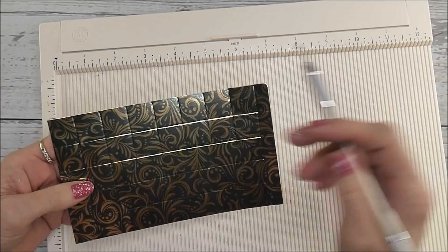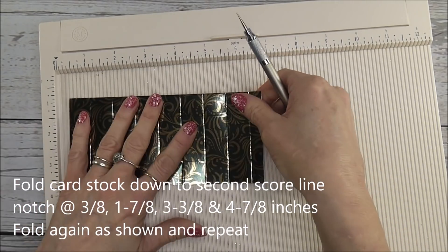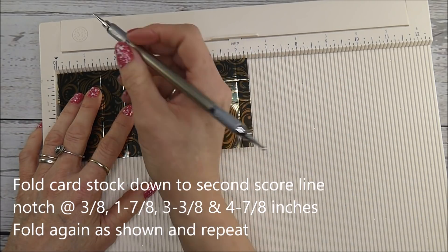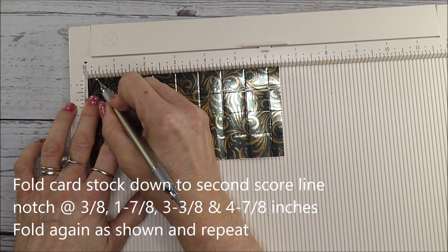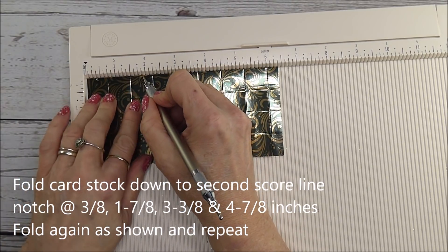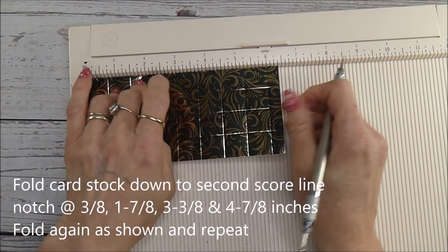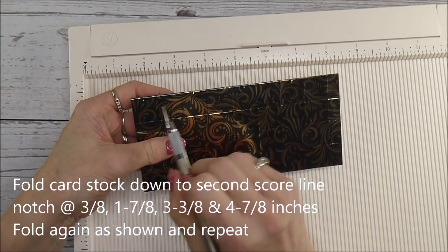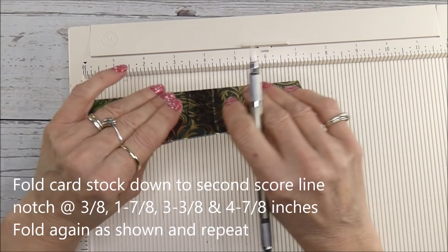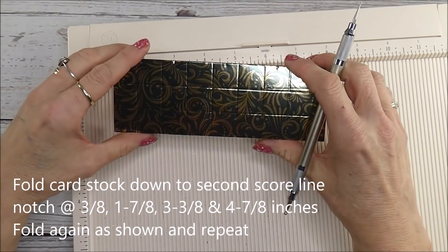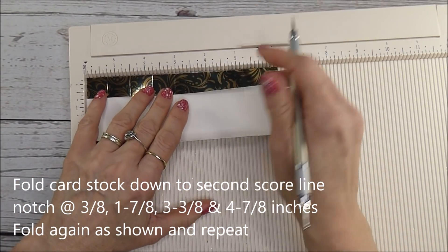Now with your card stock this way around with the narrow margin here, so these are all squares. What you're going to do is fold down to the second score line, pop your card stock back on your board and you want to make a notch. So you want to make a notch at three eighths of an inch, at one and seven eighths of an inch, at three and three eighths, and at four and seven eighths.